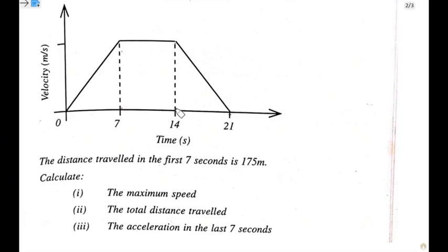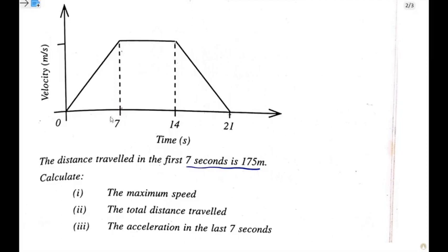The question reads: the diagram shows the velocity graph of a motorcycle during a period of 21 seconds. The distance traveled in the first 7 seconds is 1.75. You can see the first 7 seconds are right here from 0 to 7, and the distance we are considering is the area under the graph in the first 7 seconds.